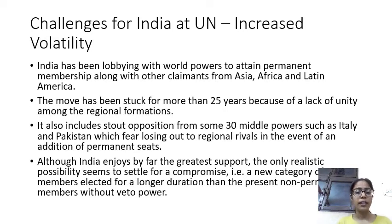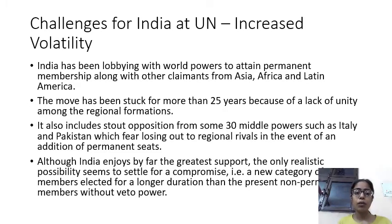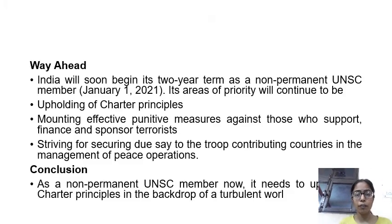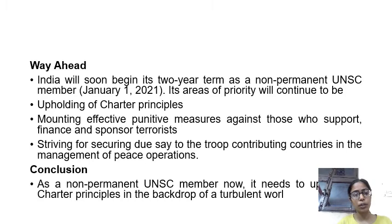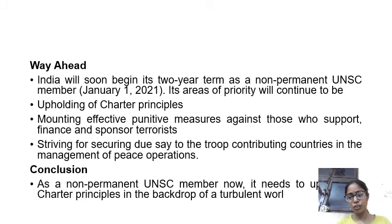India has support for permanent membership from some countries, but four countries are not allowing the expansion of permanent members. So India has faced two main failures in the United Nations: first, when it raised good issues it did not get support; and second, it has not been able to obtain permanent membership. That is where India stands in the United Nations today.